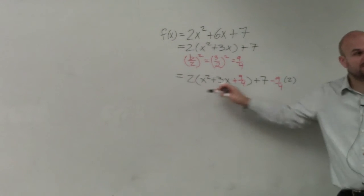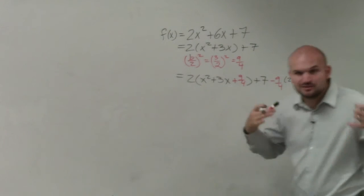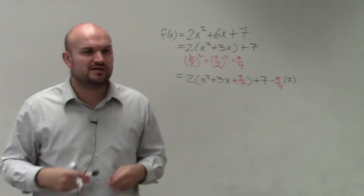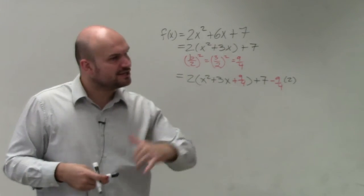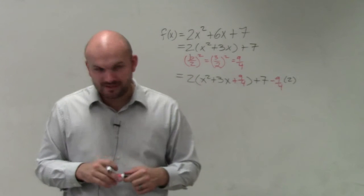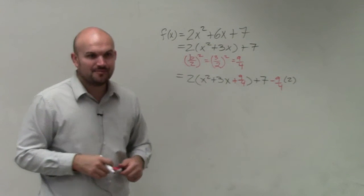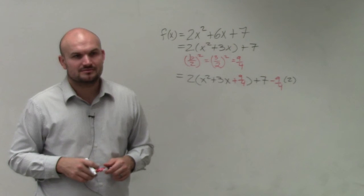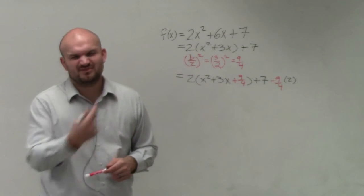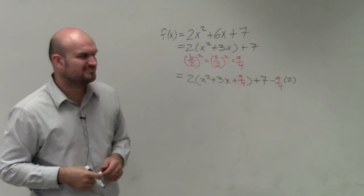All right? Now, this is a perfect square trinomial. Every single time, ladies and gentlemen, you do completing the square, you create a perfect square trinomial. Unless you're playing on your phone, you might not have a perfect square trinomial. But if you are completing the square, you will create a perfect square trinomial.